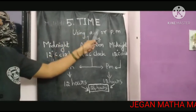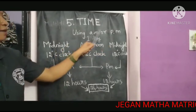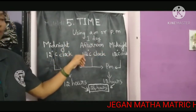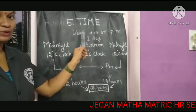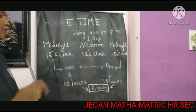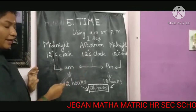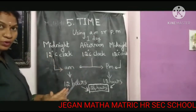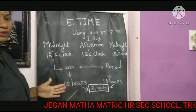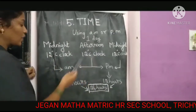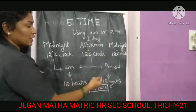Now let's see the time using AM or PM. One day equals 24 hours. From midnight 12 o'clock to afternoon 12 o'clock, we say AM. And from afternoon 12 o'clock to the next midnight 12 o'clock, we say PM.